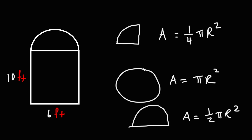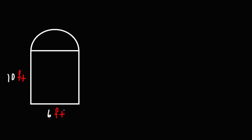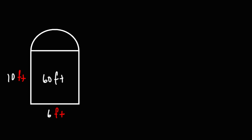So using these formulas we can calculate the area of this particular composite figure. For the rectangle, it's simply length times width: 6 times 10, and that's going to be 60 square feet.